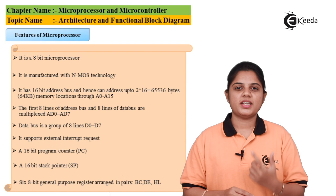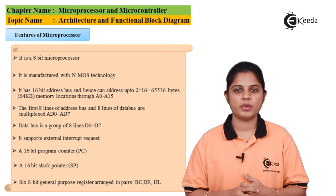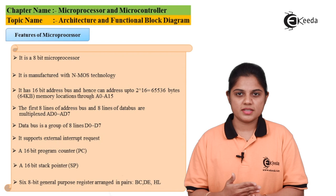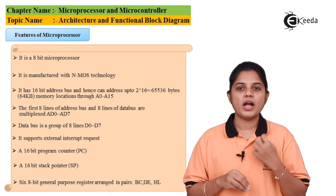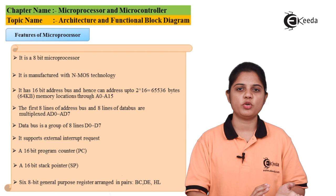Along with address bus and data bus, there are different external interrupts. An interrupt is used when some task is in process and another problem arises — before executing the current task, if you want to resolve the problem, an interrupt is used. An interrupt is a process used to interrupt the ongoing task; the processor first has to resolve the interruption and then jump back to executing the task.